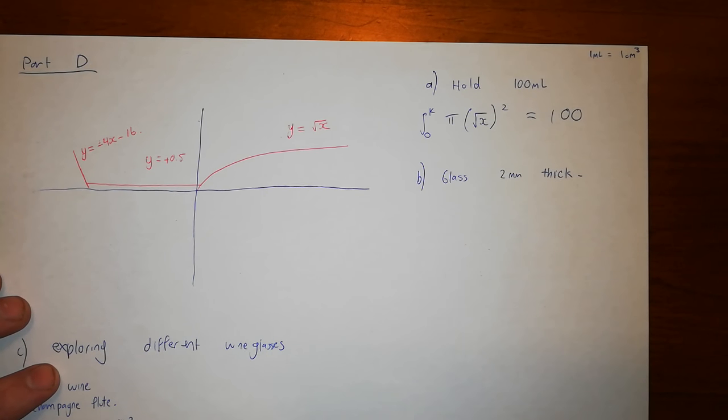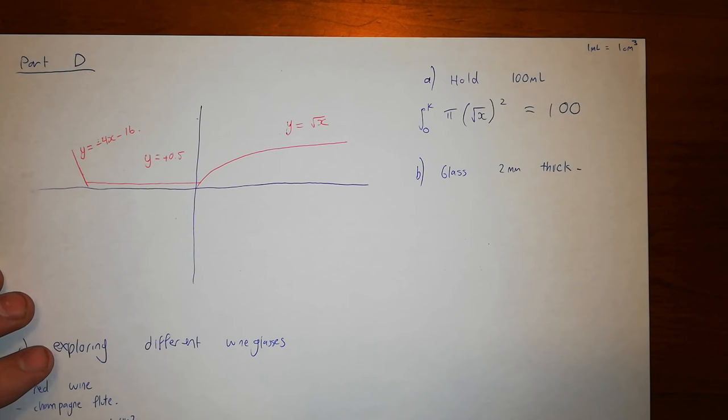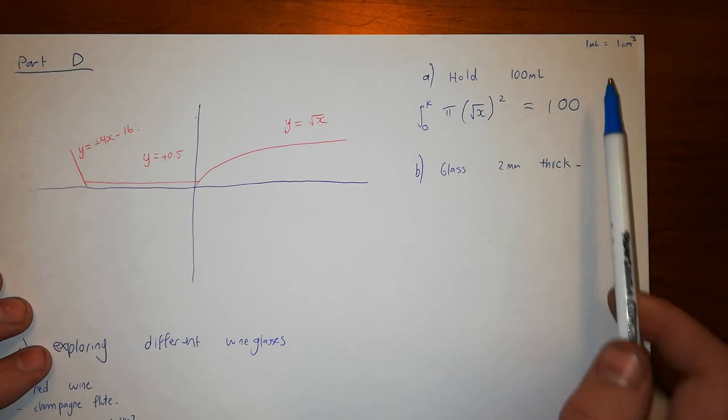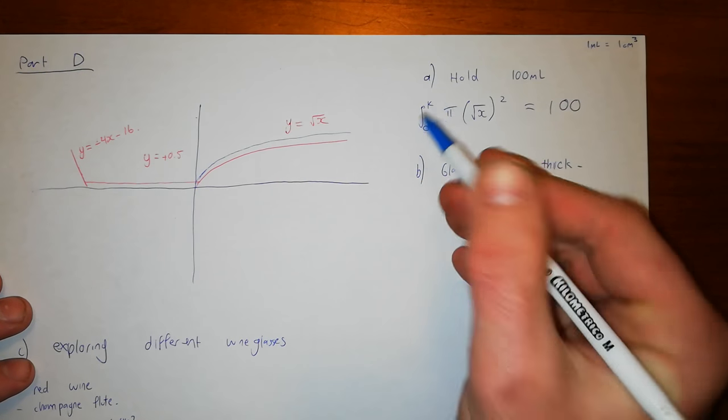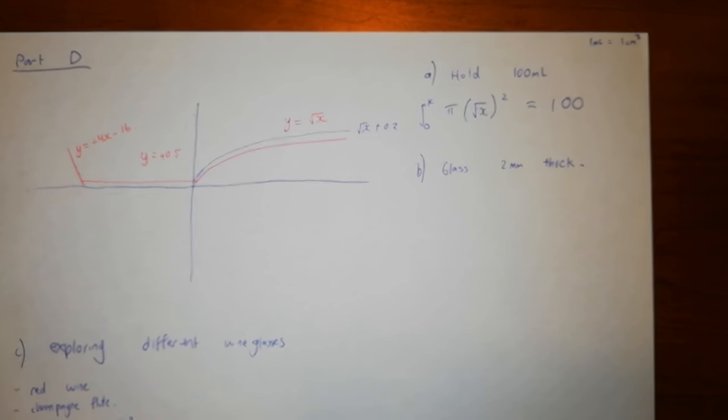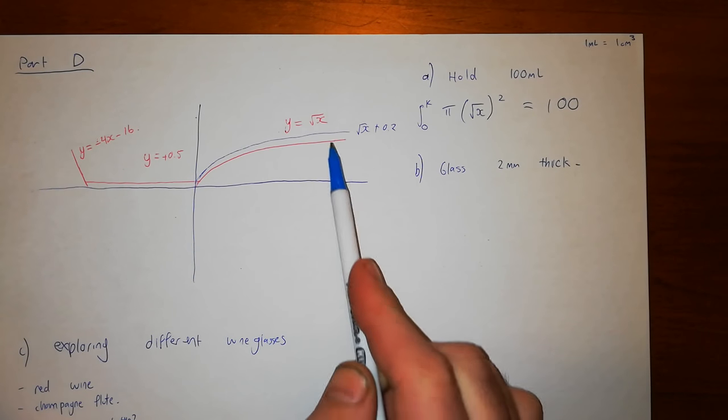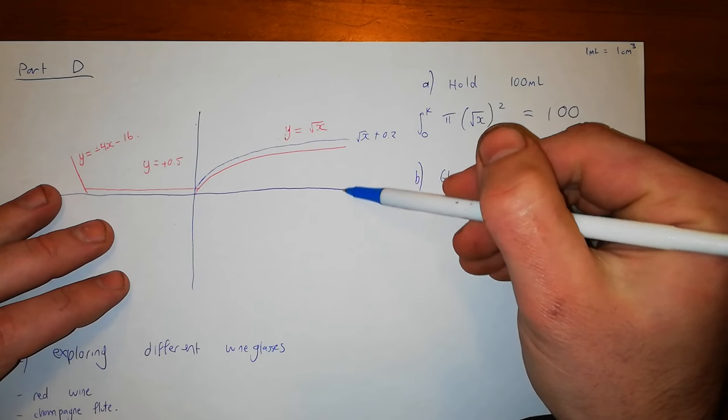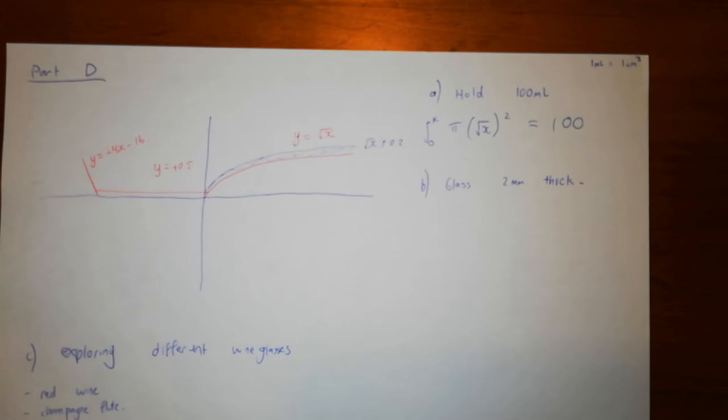In part B it gets you to investigate the same one, but it says how much glass is there going to be if the glass is two millimeters thick. So we said all of our measurements here in centimeters, and we want to know how much glass is being used if it's two millimeters thick. So that means you'll be sketching a new function which is just going to be the square root of x as well, but plus 0.2 because it's shifted up two millimeters or 0.2 centimeters.